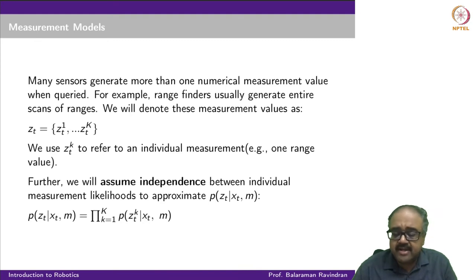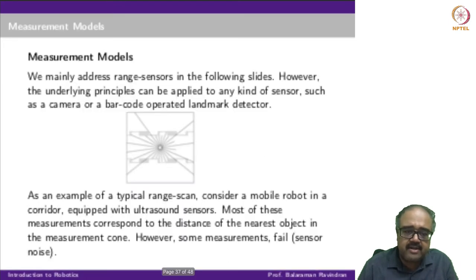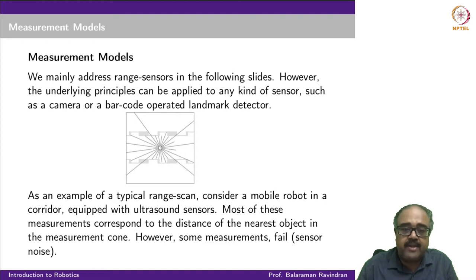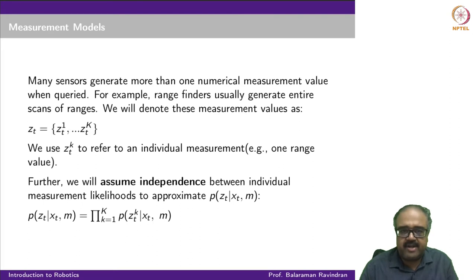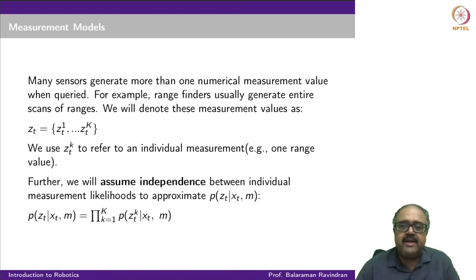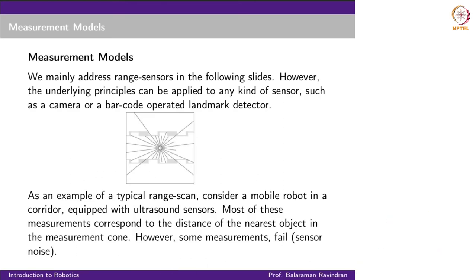Many sensors generate more than one numeric measurement value. A range finder gives all the ultrasound readings — multiple readings, each returning a specific range value. So a single range sensor corresponds to a vector of measurements z1 to zK. At every time step t, I have all K measurements available, and I use z sub t comma k to denote a specific individual measurement, where k equals 1, 2, 3 and so on.